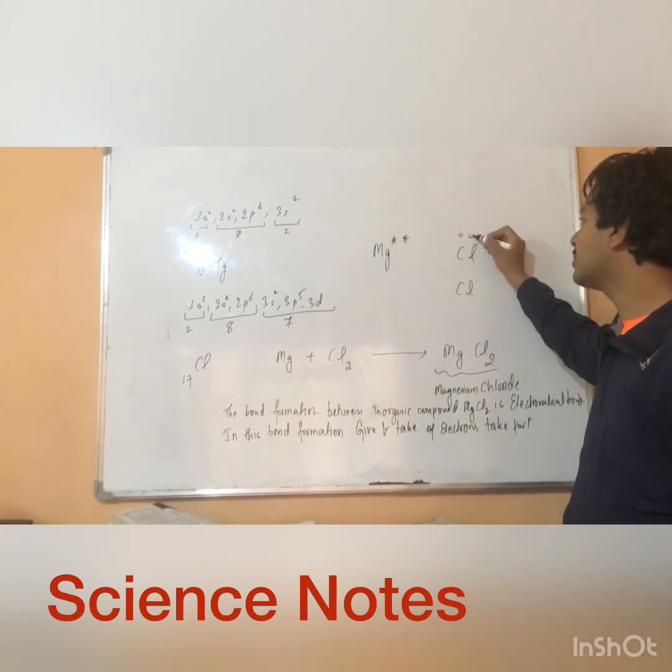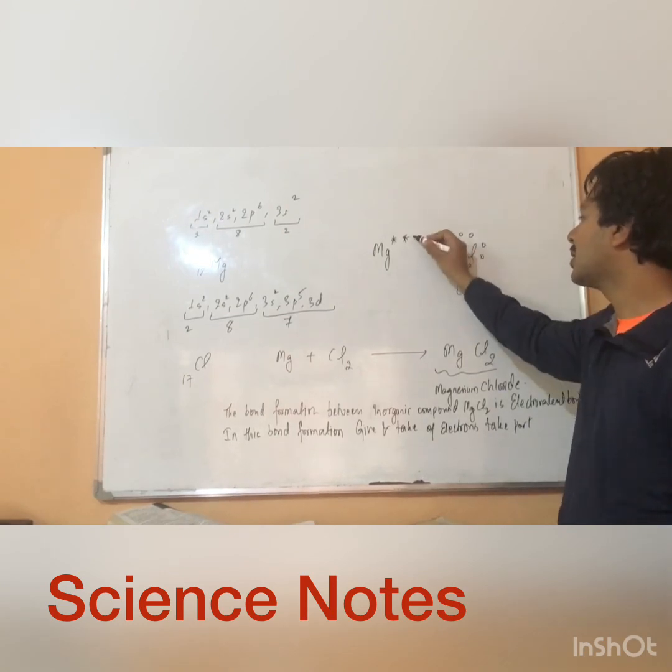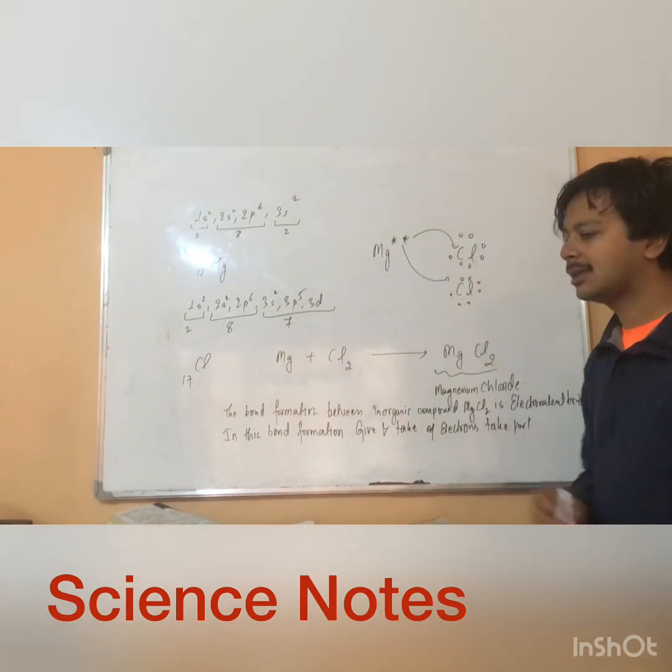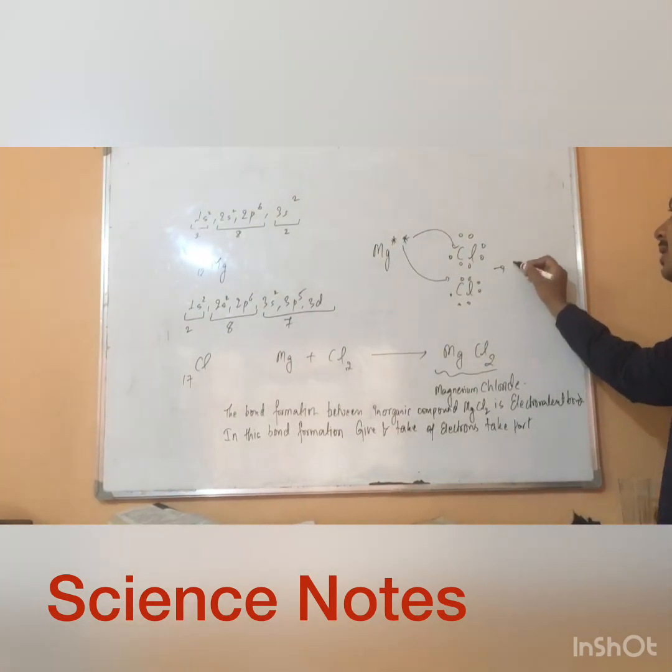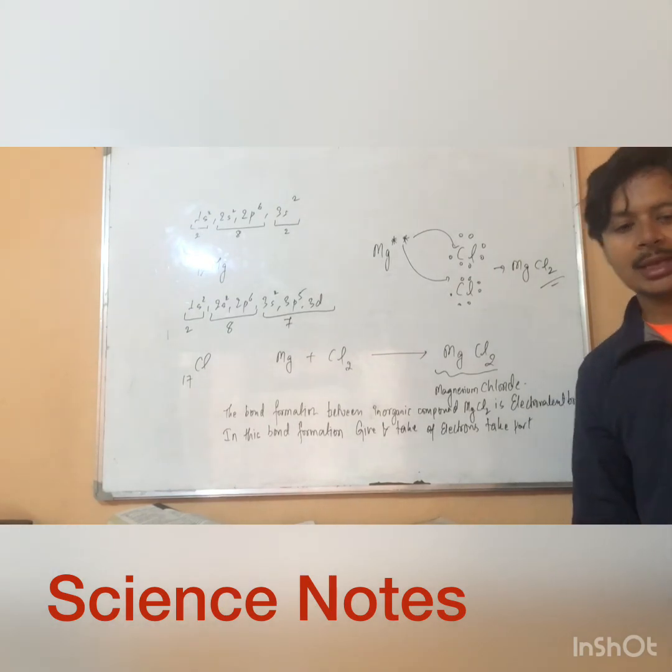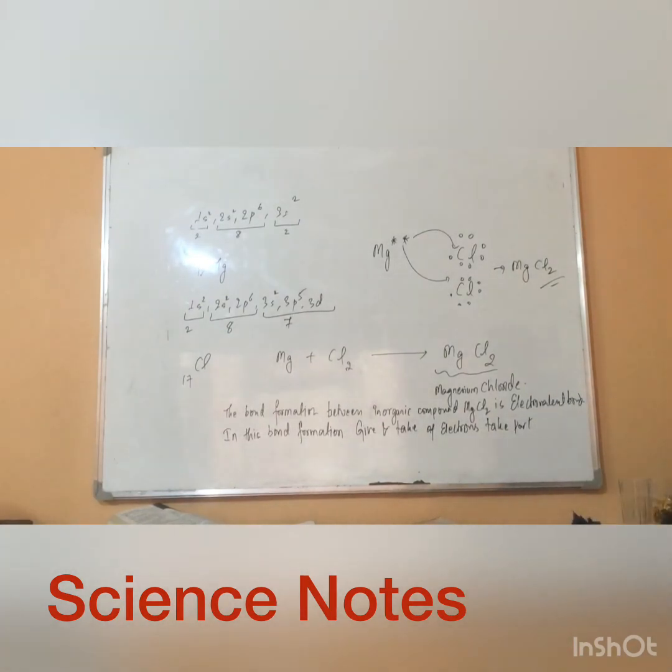This is about 1, 2, 3, 4, 5, 6, 7. And what's this bond? MgCl2 bond. If you knew MgCl2 bond, what will it be? Let's give an electrovalent bond for example.